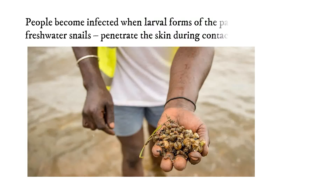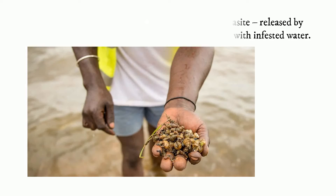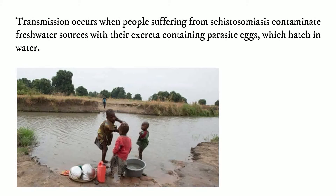People become infected when larval forms of the parasite, released by freshwater snails, penetrate the skin during contact with infested water. Transmission occurs when people suffering from schistosomiasis contaminate fresh water sources with their excreta containing parasite eggs, which hatch in the water.